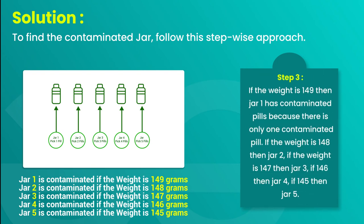Step 3: If the weight is 149, then jar 1 has contaminated pills because there is only one contaminated pill. If the weight is 148, then jar 2. If the weight is 147, then jar 3. If 146, then jar 4. If 145, then jar 5.